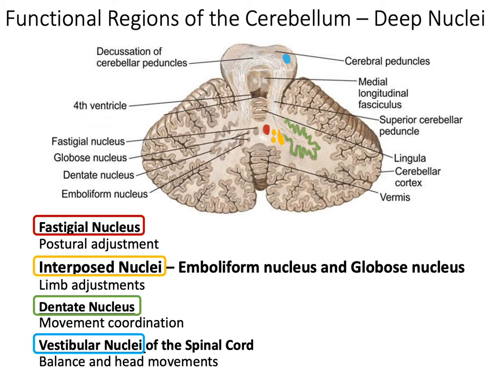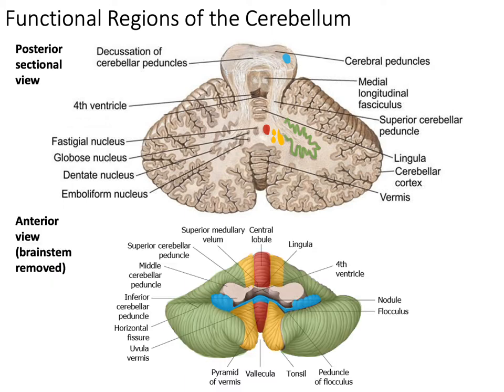Make sure to note that the vestibular nuclei is located in the pons, but not in the flocculonodular lobe. It's actually quite a large nucleus with a couple of subsections. To summarize: fastigial nucleus is associated with the vermis, interposed nuclei with the intermediate region, dentate nucleus with the lateral region, and the vestibular nuclei is associated with the flocculonodular lobe, even though it's not a true cerebellar nucleus.